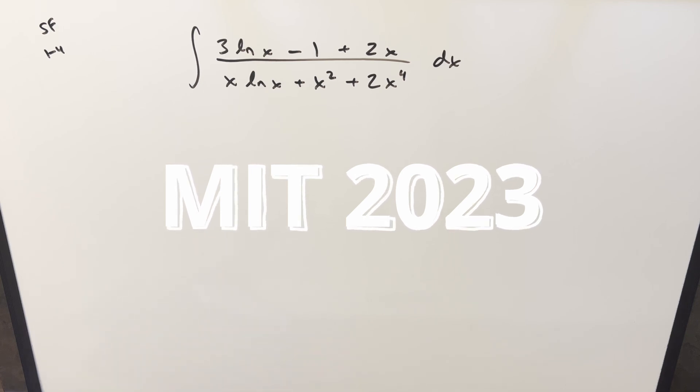We have the integral of 3lnx minus 1 plus 2x over xlnx plus x squared plus 2x to the fourth dx.